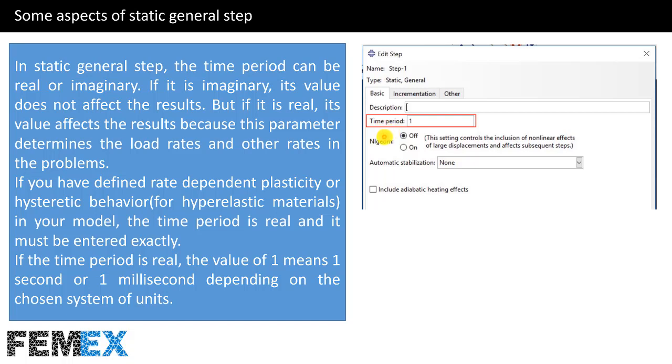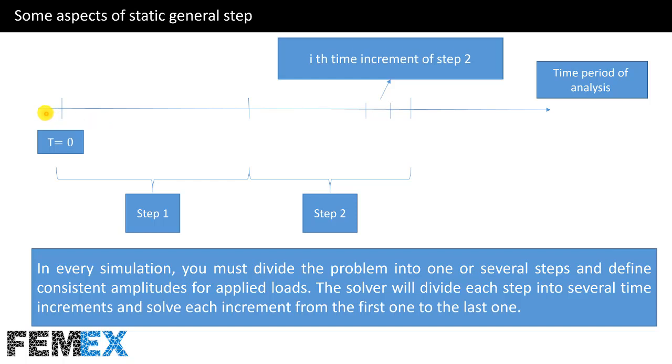If the time period is real, the value of 1 means 1 second or 1 millisecond depending on the chosen system of units. This is the axis of time period of analysis. This is the axis of time period of analysis and this part belongs to step 1 and this part belongs to step 2.